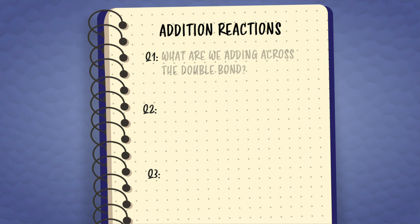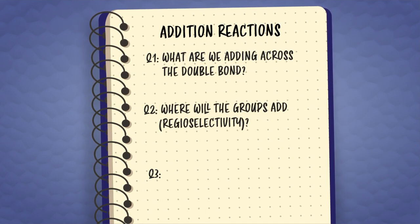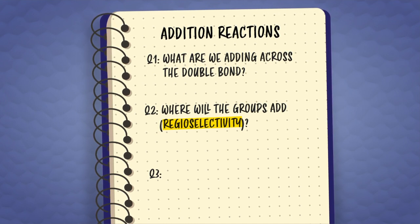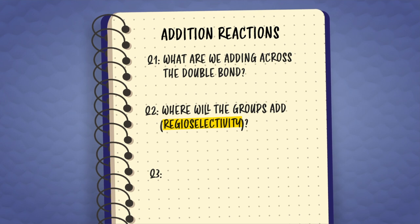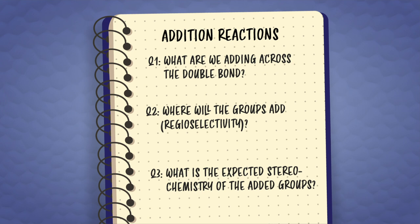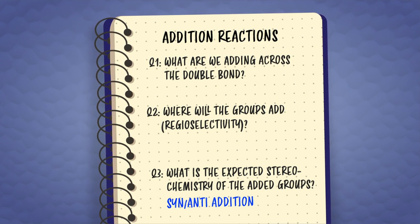Like we worked on last episode, a handy way to see patterns and predict products in addition reactions is by asking three key questions — our three-part secret handshake. Question one: what are we adding across the double bond? Question two: where will the groups add on an asymmetrical molecule? In general, this is asking about regioselectivity — Markovnikov's rule is an example. And question three: what is the expected stereochemistry of the added groups? If they're added to the same face of the alkene, it's syn addition. If they're added to opposite faces, it's anti addition. In this episode, we'll look at these questions in the context of reactions that oxidize our alkene friends.